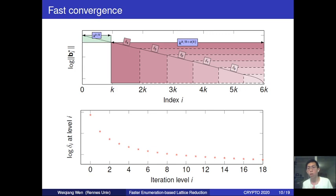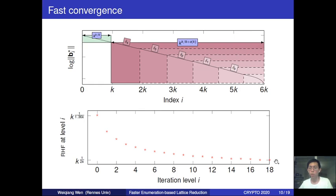That is why the ratio between two successive Gram-Schmidt norms is getting smaller and smaller. Eventually we reach one segment of line with slope approaching the one generated by SDBKZ, and this slope helps reach the expected root Hermit factor. Also, after a logarithmic number of iterations—for example 10 iterations when k = 1000—the root Hermit factor already converges very well, confirming that only a logarithmic number of iterations is needed to approach our target.